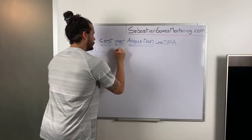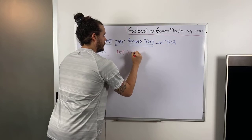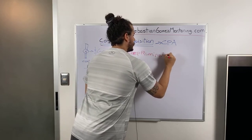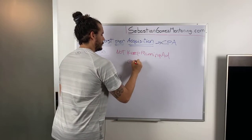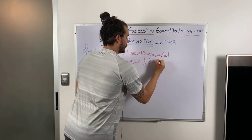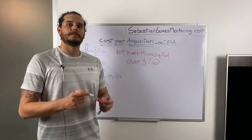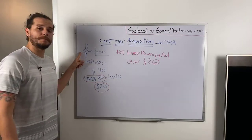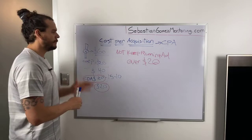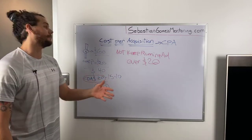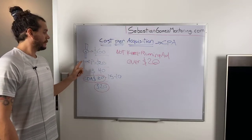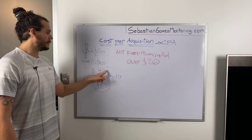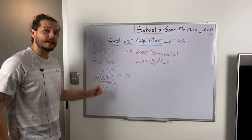So if my CPA is twenty dollars, I will not keep running an ad if it goes over twenty dollars. Why? Because if it's over twenty dollars, I'm basically losing money. That's the most important thing to understand. Quick recap: sixty-dollar watch, twenty dollars to acquire it, forty-dollar margin — and I'm willing to spend fifty percent of that margin, which is twenty dollars, to acquire a customer.